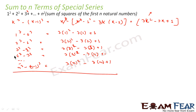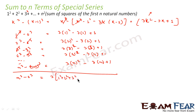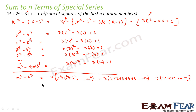Now if you add all these equations, the left-hand side telescopes: 1³ cancels, 2³ cancels, 3³ cancels, and so on. What remains on the left is n³ − 0³ = n³. On the right we get: 3(1² + 2² + 3² + ... + n²) − 3(1 + 2 + 3 + ... + n) + (1 + 1 + 1 + ... n times).